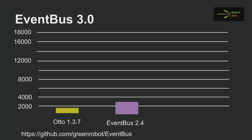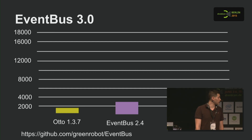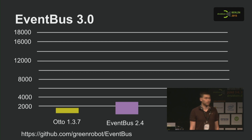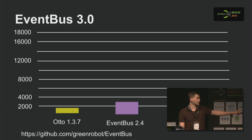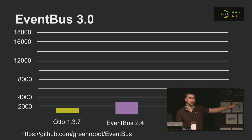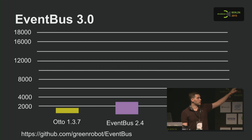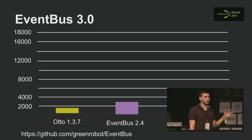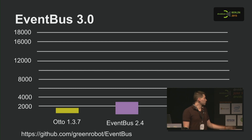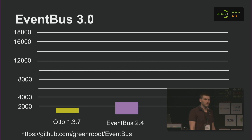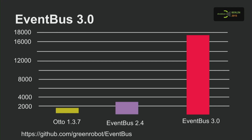EventBus version 3 was announced today, and it's based on annotation processing as well. With Otto and EventBus 2.4, you get a performance of about 1,500 to 3,500 registrations per second. Otto registers around 1,500 classes per second, EventBus 2.4 uses a naming convention to speed that up to about 3,500. But with EventBus 3, based on annotation processing, you get around 17,000 per second. This benchmark was done on a Nexus 9.